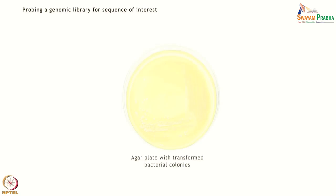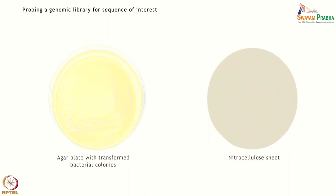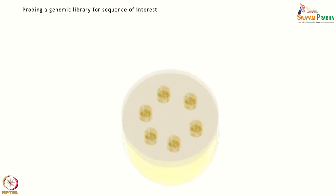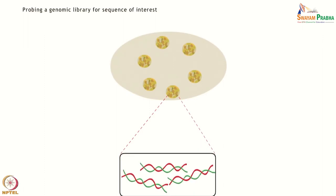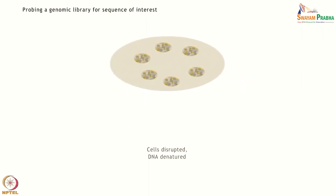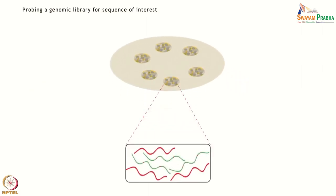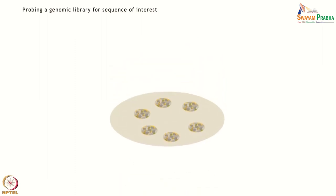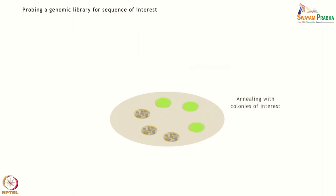Once the library has been created, it is essential to have techniques to retrieve a sequence of interest. The transformed cells are selected and plated on agar, after which the plate is blotted onto nitrocellulose paper. This is then treated with alkali, bringing about disruption of the cells and denaturation of the dsDNA. The denatured DNA is then probed for the sequence of interest using a radio-labelled molecule with a complementary sequence.